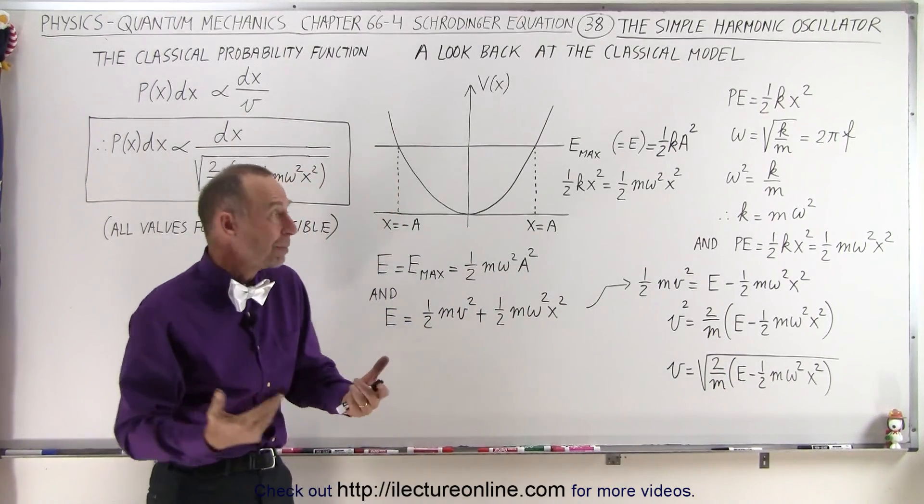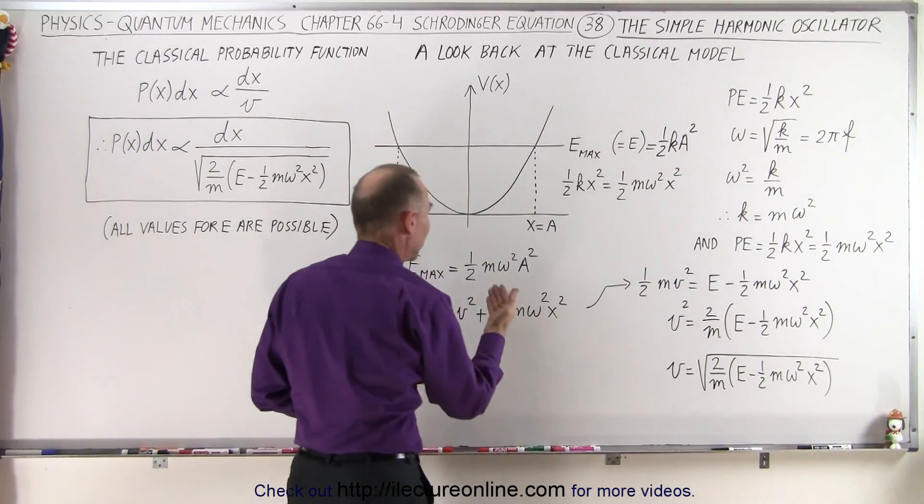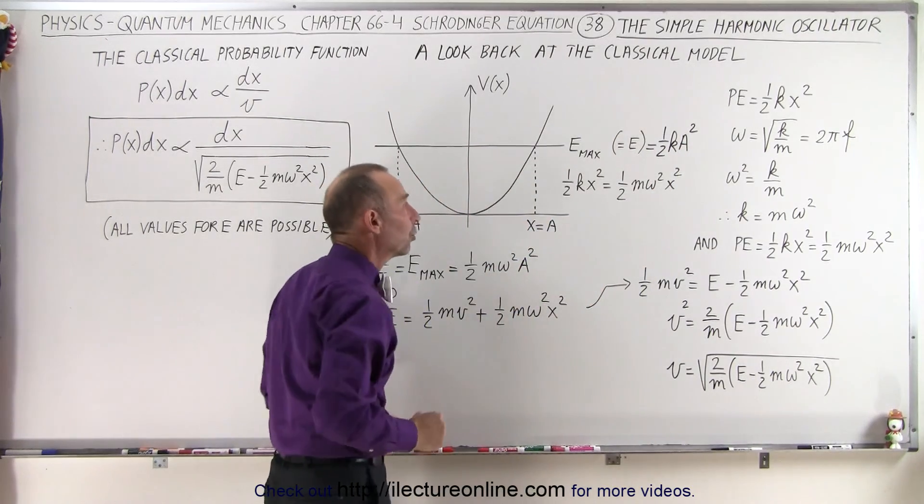You may wonder, how can that be possible? How can one-half ka squared be equal to one-half m omega squared a squared? Well, it turns out if we start with the equation that the potential energy is one-half kx squared, and omega of an oscillator is equal to the square root of k over m.